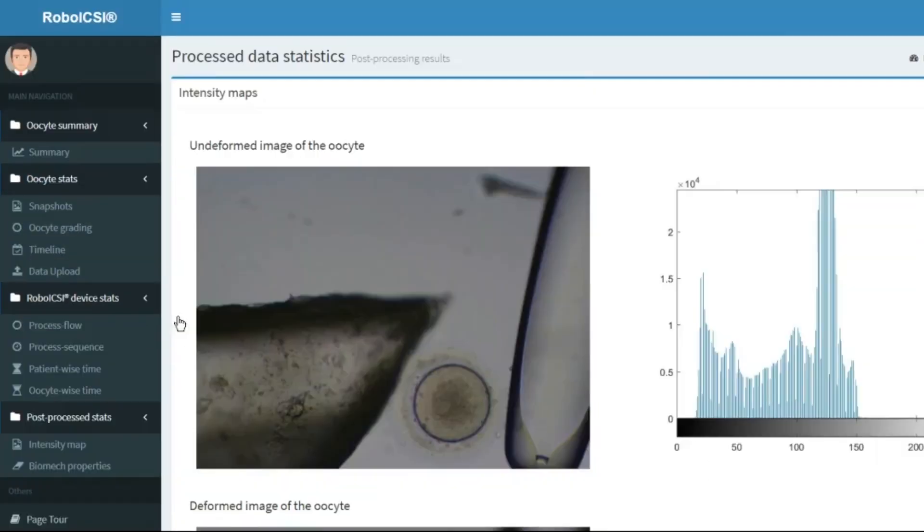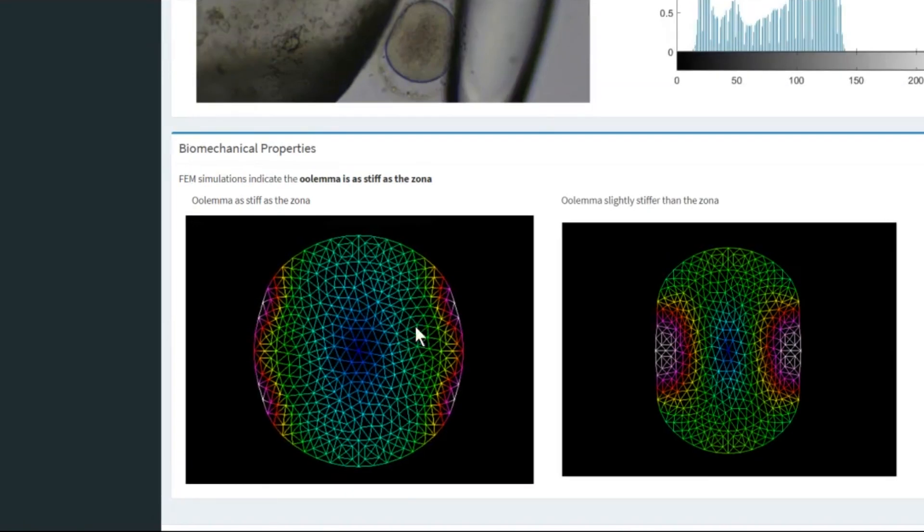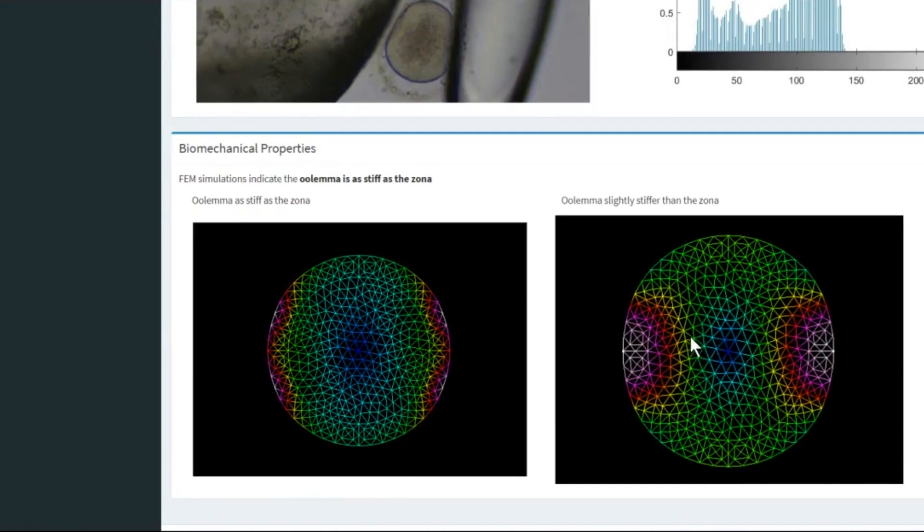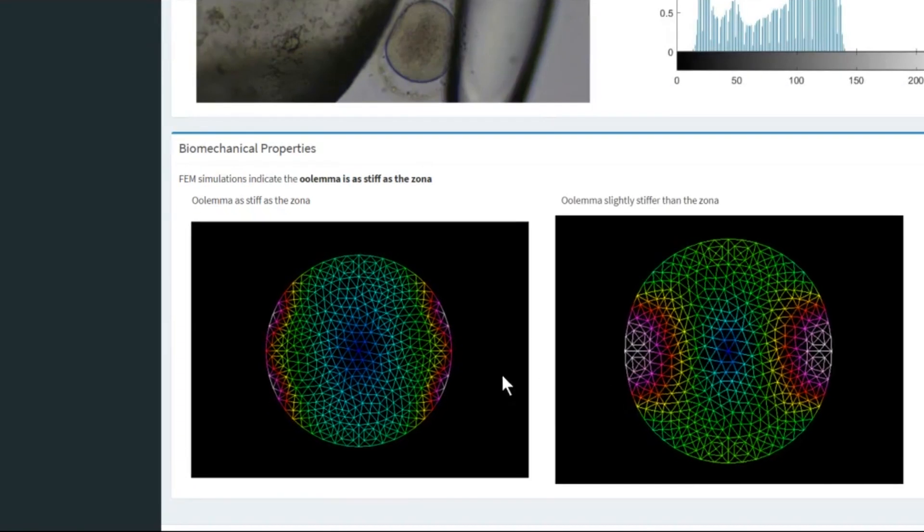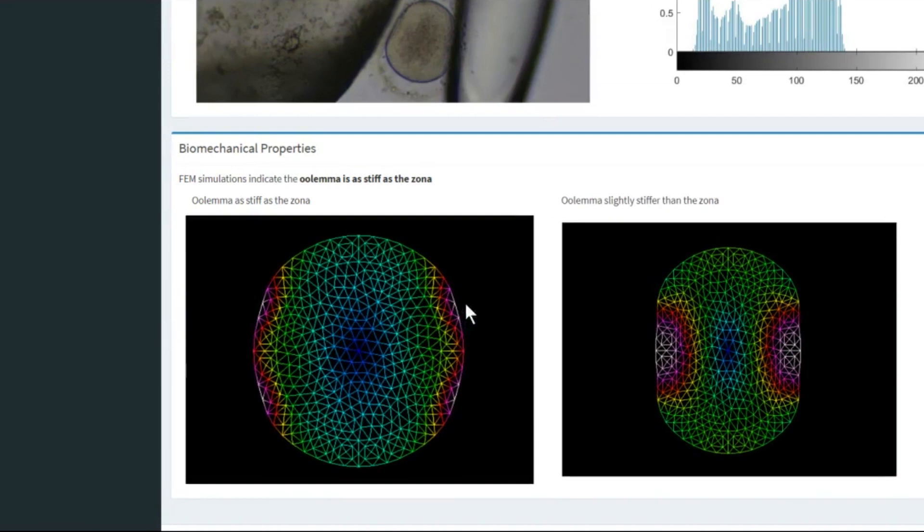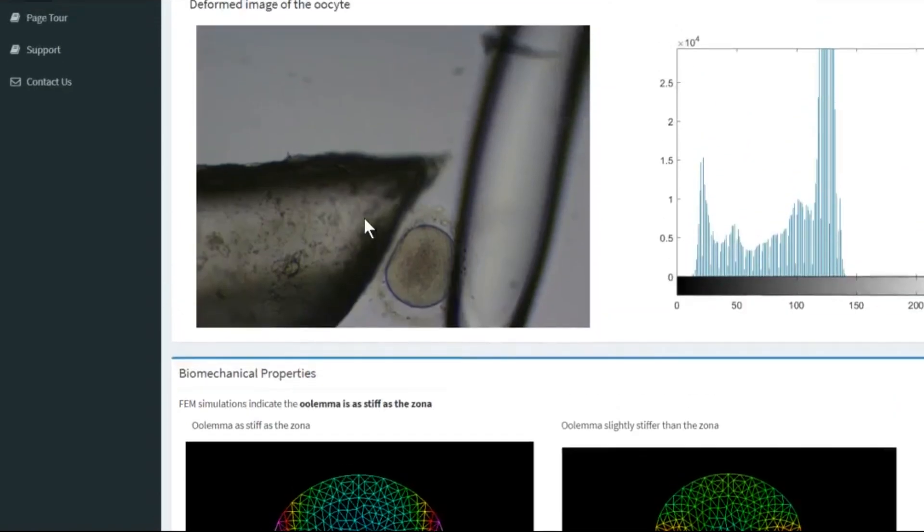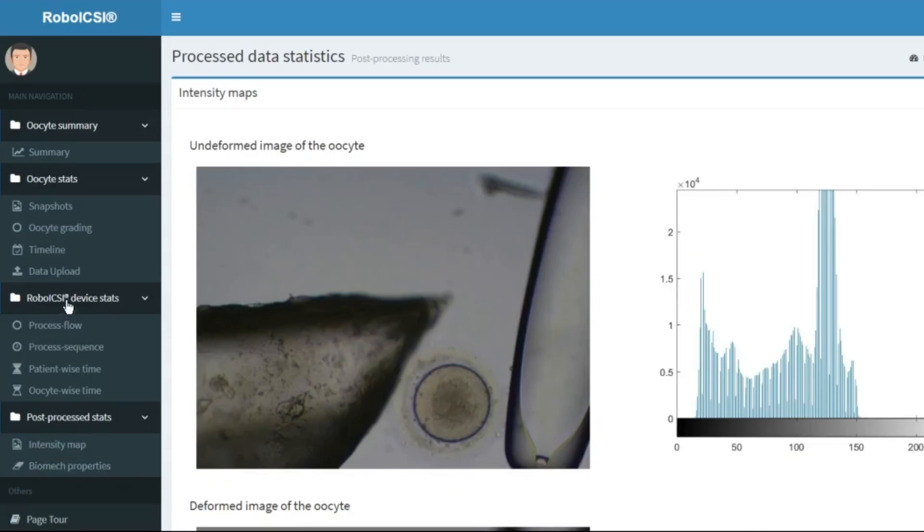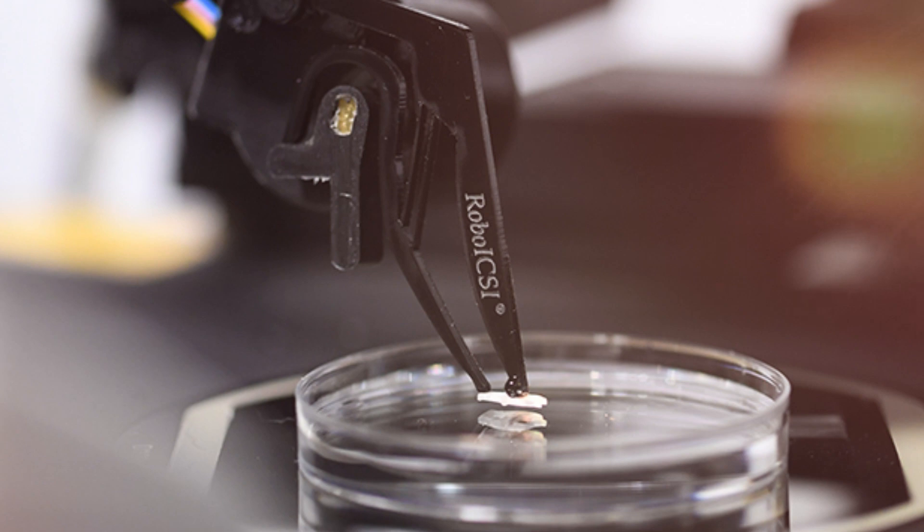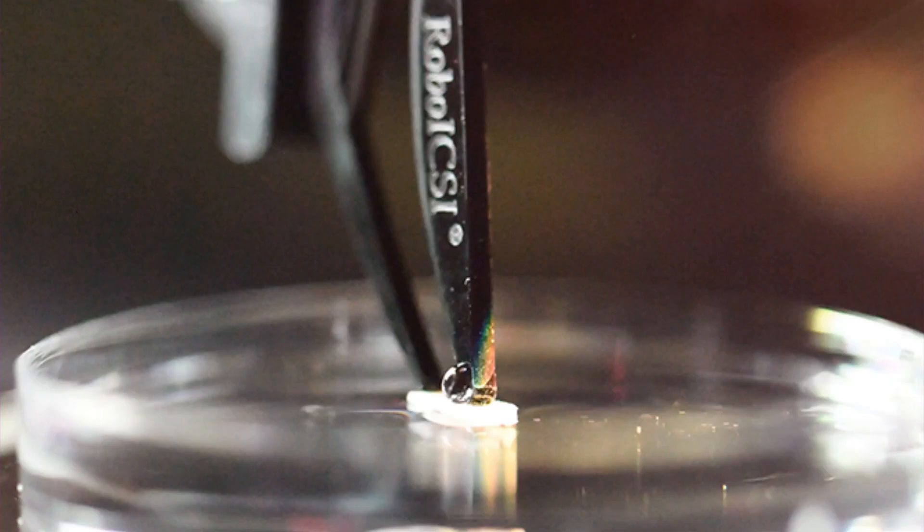Due to its novel design technique, Robo-ICSI can also help estimate biomechanical properties like oocyte stiffness and funneling characteristics. These properties possess information about the health status of oocytes and embryos. Now, with no additional effort, we will know more about the oocytes.